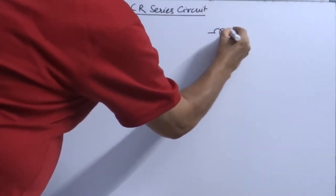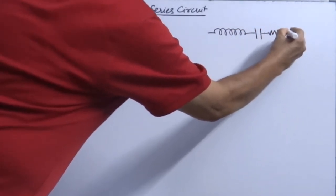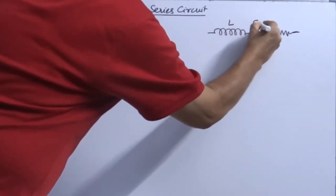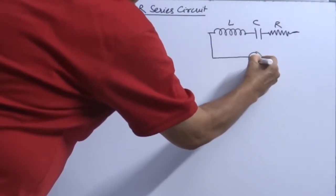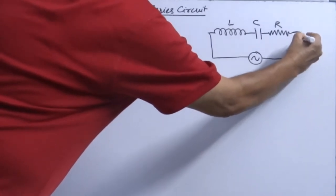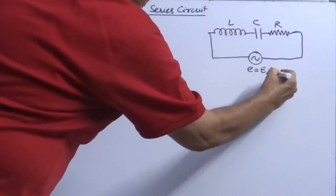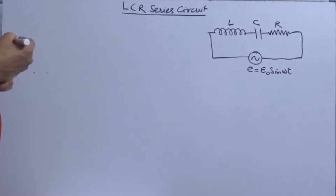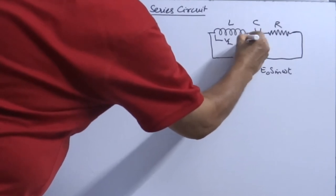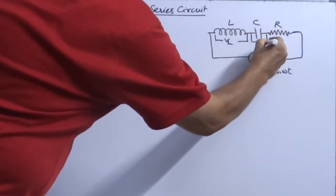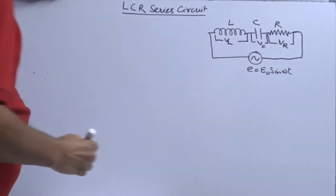Where inductor, capacitor and resistance all three are connected in series. So we consider inductor of inductance L, capacitor of capacitance C and resistor of resistance R are connected in series. E equals E naught sine omega t is applied potential difference. If I say VL is potential difference across inductor, VC is potential difference across capacitor, VR is potential difference across resistor.